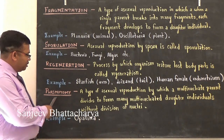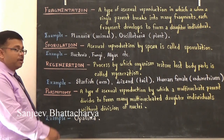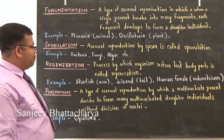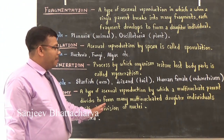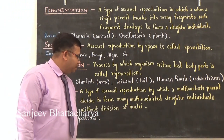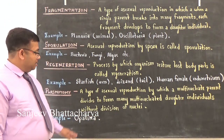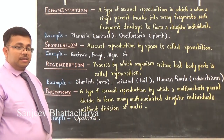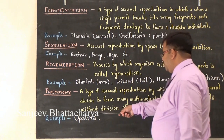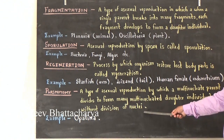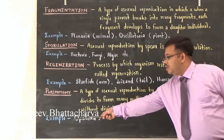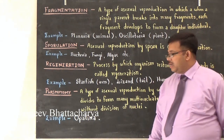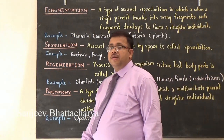Plasmotomy is a type of asexual reproduction by which a multinucleate parent divides to form many multinucleate daughter individuals, but without division of the nuclei. The example is Opalina, in which plasmotomy is observed.